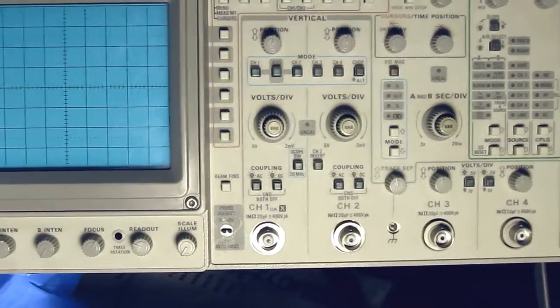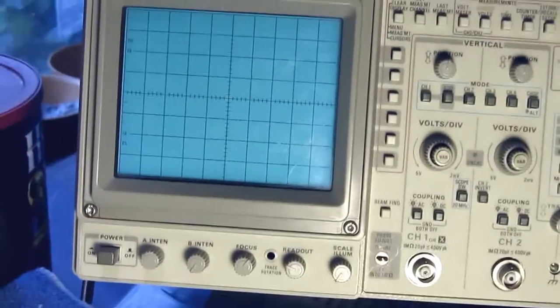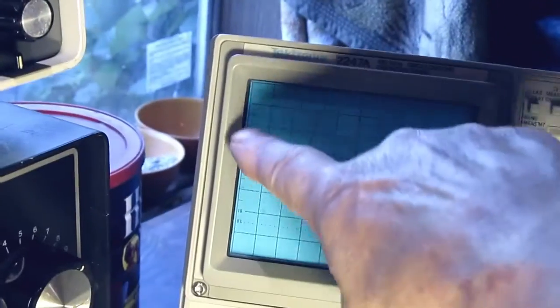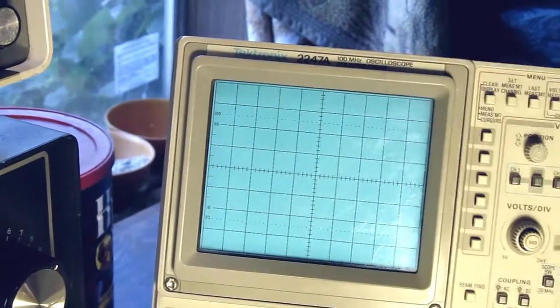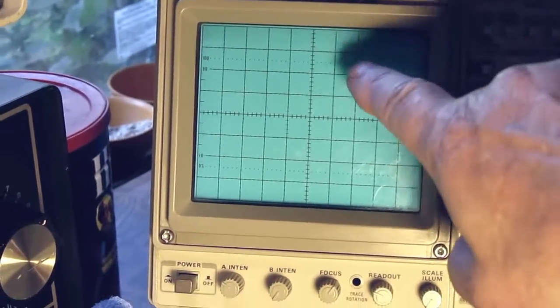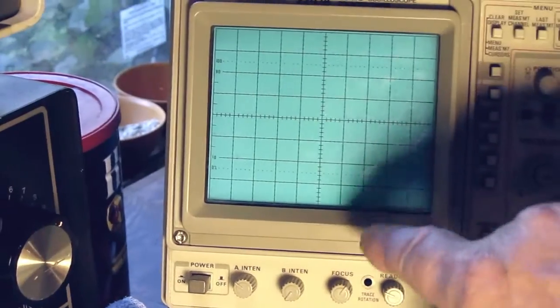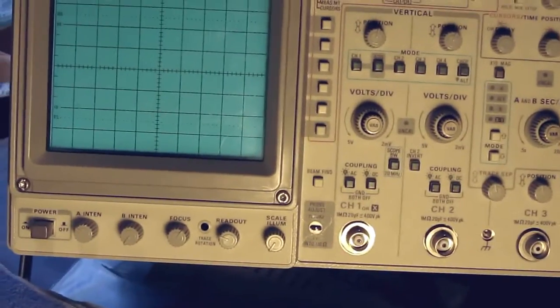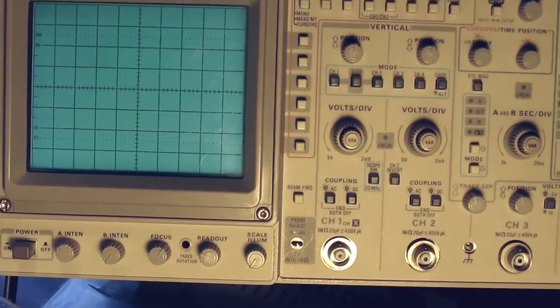It'll show little numbers either down in a row here or in a row up here. The menu will appear here and then these buttons will let you select whatever menu is on the screen. Anyway, nothing's connected.